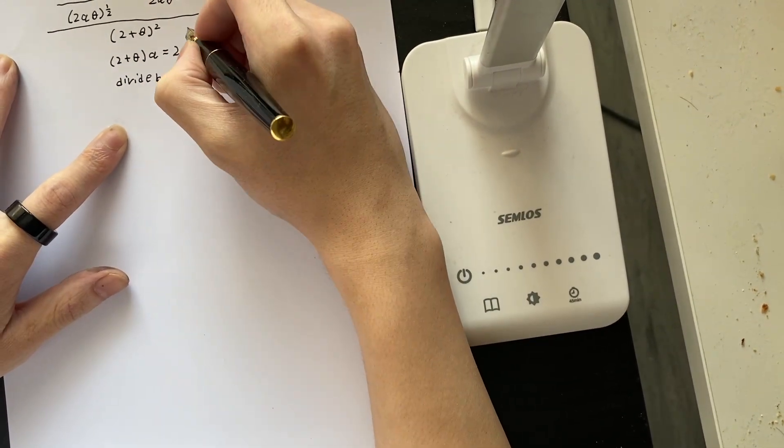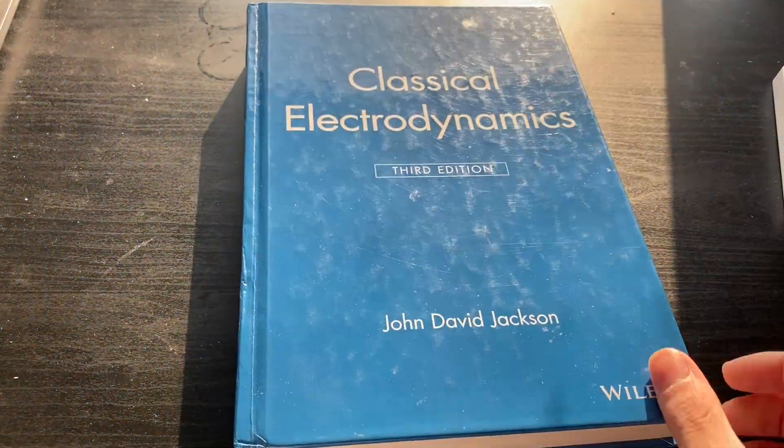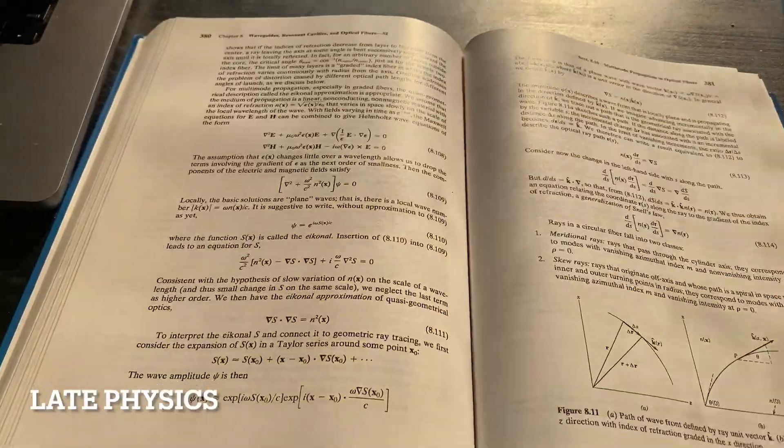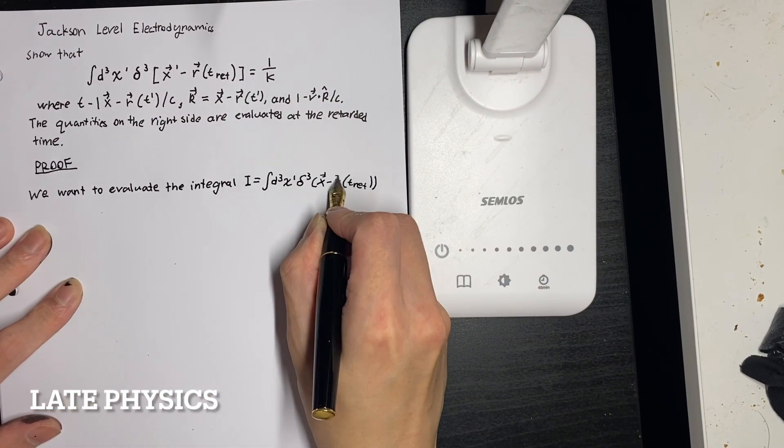Now, here's an example from Jackson's Classical Electrodynamics. I'm working with abstract proofs.